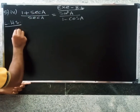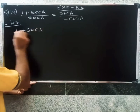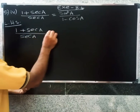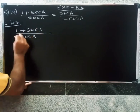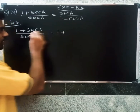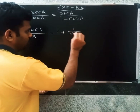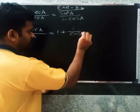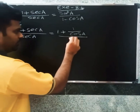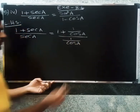So for LHS: 1 plus cos A divided by cos A. We can split this as 1 divided by cos A plus cos A divided by cos A, which gives us 1 over cos A plus 1.